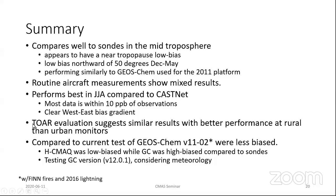We looked at the TOAR database and used the TOAR five-year average as a climatology to compare to our results. Generally at the rural monitors, we tended to agree quite well. When we initially were doing this run, we were comparing it to GEOS-Chem version 12.02, and it had sort of the opposite direction — it was a little on the high bias side, whereas this was a little on the low bias side.